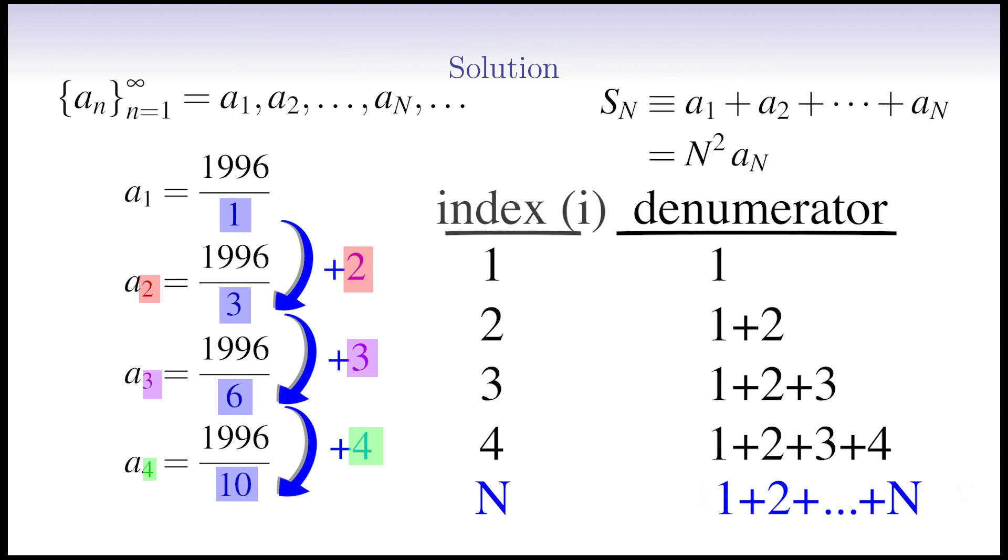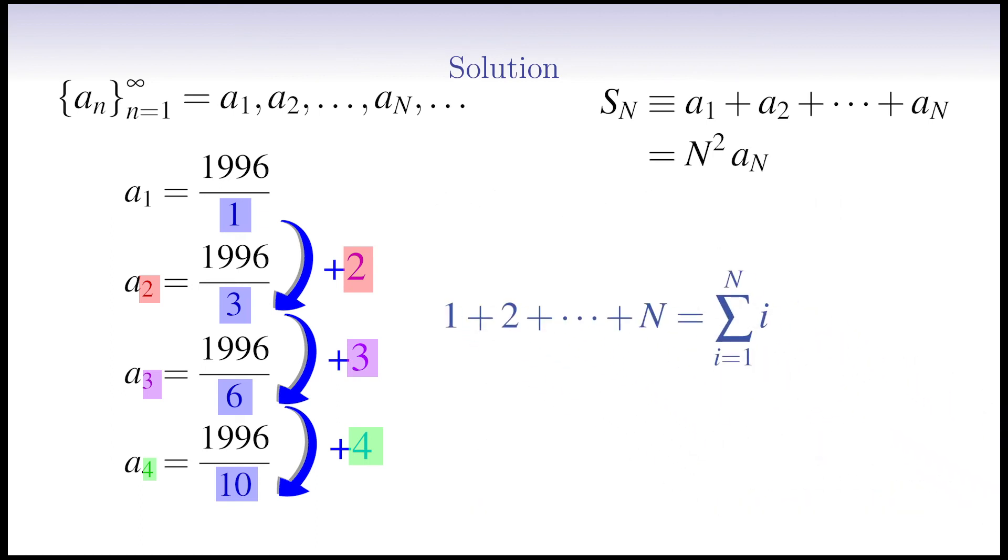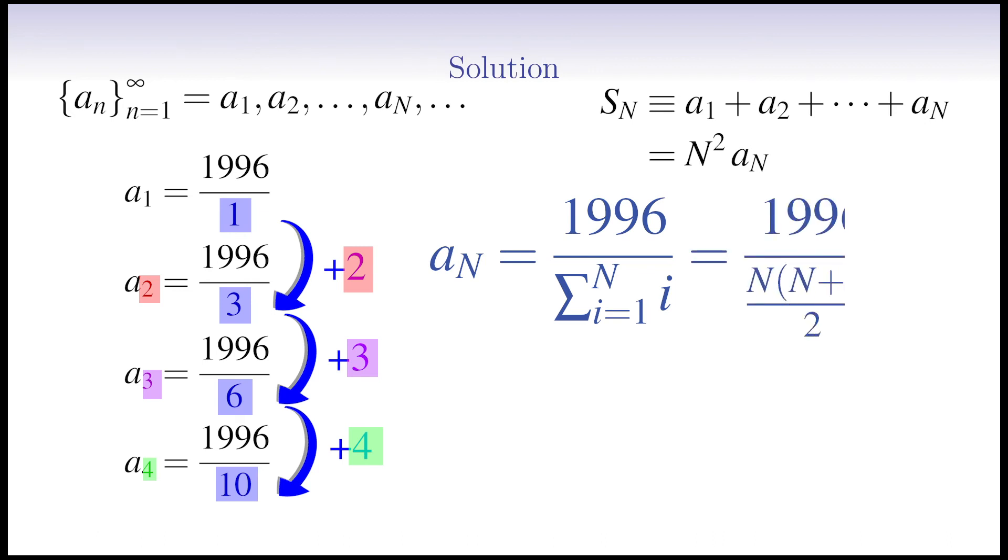In math language, we can write this by a sigma sign. Now, we can easily predict what the term number n is. This term is a fraction with 1996 as the numerator, and the sum of natural numbers up to n as the denominator. By the way, the sum of natural numbers up to n is n multiplied by n plus 1, divided by 2.